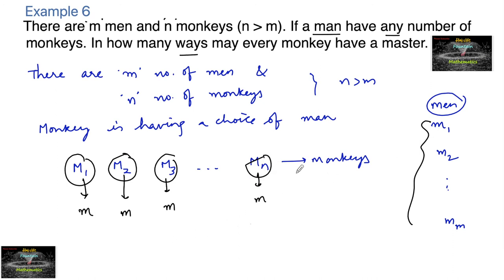It's the concept of the number of permutations of m different things taken n at a time, which is m to the power of n, using the formula n power r. Or we can say that the first monkey has m choices, and the second monkey also has m choices, by the multiplication principle, the fundamental principle of counting.